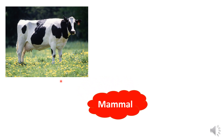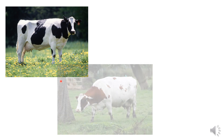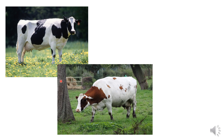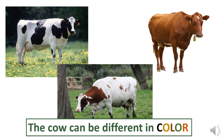Now, look at this animal. What is this? This animal feeds their young milk. So it is a mammal, of course. This is the cow. Let's see other cows. This one has brown hair and white, and this one has entirely brown hair. So the cow can be different in color also.